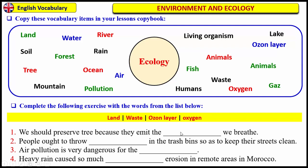Now I'll give you the key answers for this exercise. Number one: we should preserve trees because they emit the oxygen we breathe. Number two: people ought to throw waste in the trash bins so as to keep their streets clean. Number three: air pollution is very dangerous for the ozone layer. Number four: heavy rain caused so much land erosion in remote areas in Morocco.